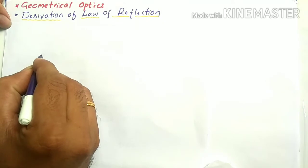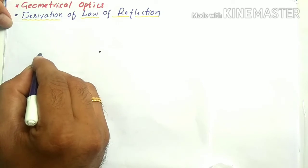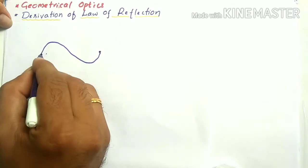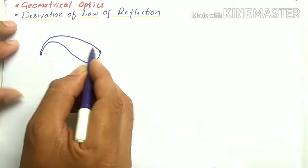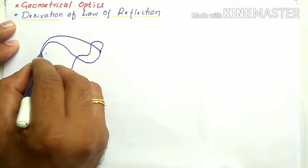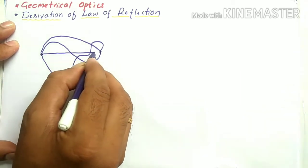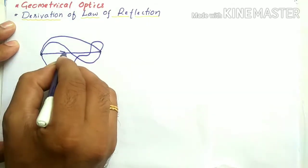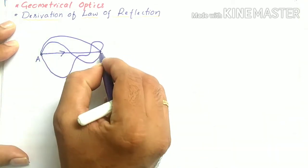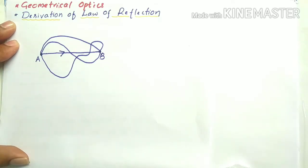Suppose this is a point A and this is a point B. If the light wants to travel then it has a number of paths — it may travel in this path, or this path, or this path. But what light always does is follow the path which requires the least time to reach the target. This path gets the least time to travel from A to B. This is nothing but Fermat's Principle.